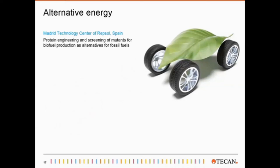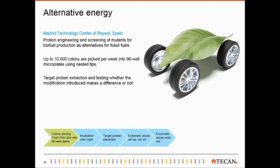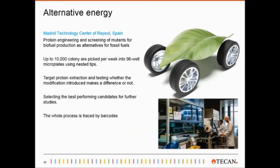Also developing alternative energies is the Madrid Technology Center of Rapsol in Spain. They use protein engineering to develop alternatives for fossil fuels. They pick up to 10,000 colonies per week into 96-well plates. After picking, they extract the target protein to test whether the introduced modification did the desired difference. The target protein is extracted for an enzymatic assay, which is run overnight and ready for readout the following morning, saving up to 12 hours. In the end, they select the best performing candidates for further investigation, and to trace the entire process, they use barcodes on all their plates.